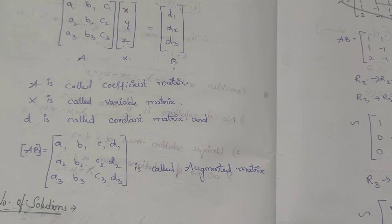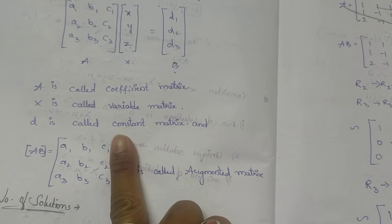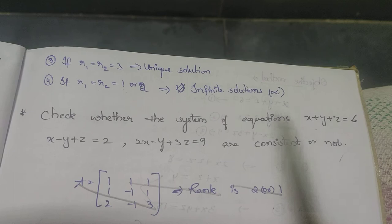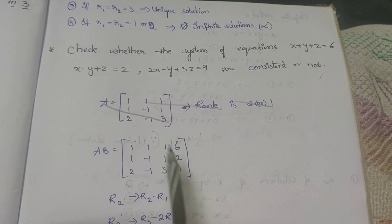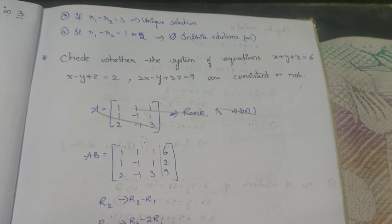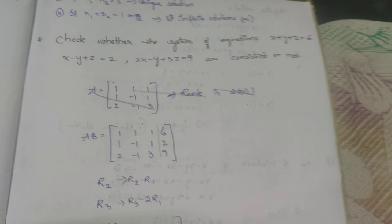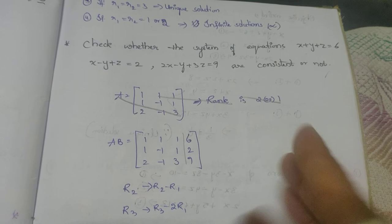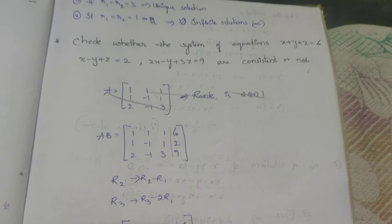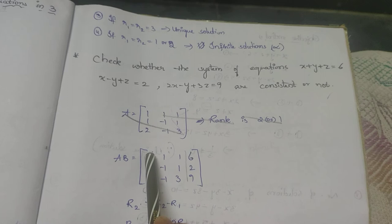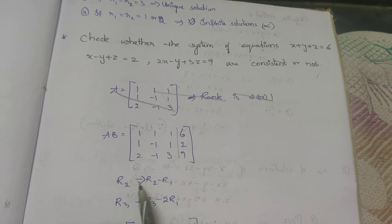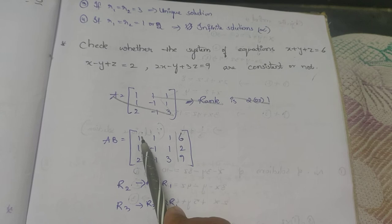Write the augmented matrix [A|B] with coefficients: first row 1, 1, 1 | 6; second row 1, −1, 1 | 2; third row 2, −1, 3 | 9. To convert to echelon form, apply R2 → R2 − R1 and R3 → R3 − 2R1. Second row becomes 0, −2, 0 | −4. Third row becomes 0, −3, 1 | −3.